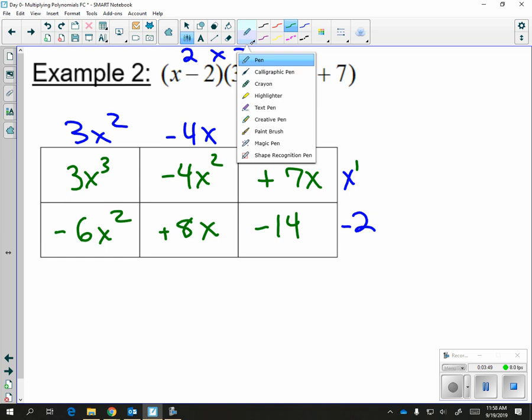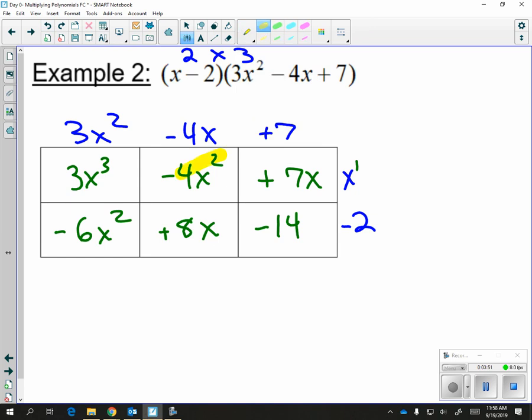In this case, we have multiple diagonals, right? So we're going to add along each diagonal separately. Our answer, my largest exponent is x cubed. So I'm going to start with the 3x cubed. Go on to the x to the second power. I have a negative 6 and a negative 4 along those diagonals. So that's going to give me a negative 10x squared. Along the next diagonal, 8 plus 7 is 15x and my constant.